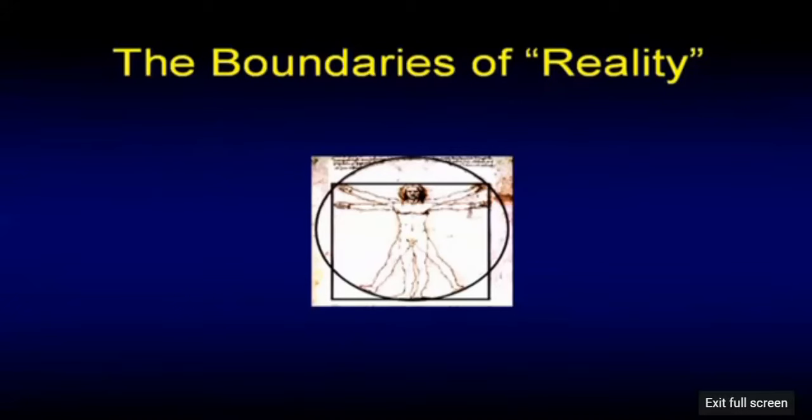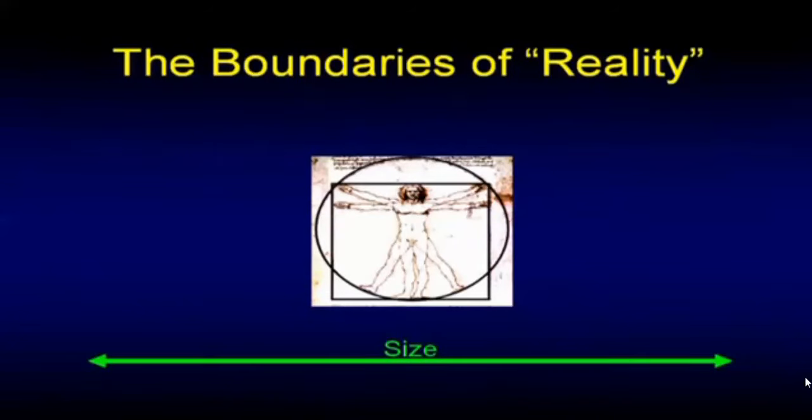I'm using Da Vinci's Vitruvian Man as a symbol representing our anthropic reach. I'm using size horizontally at the bottom, large being on the right side of the diagram, small being at the left.